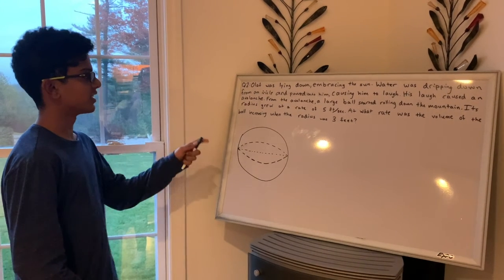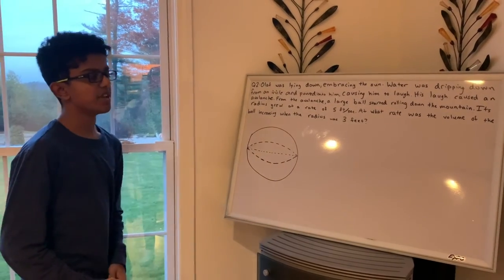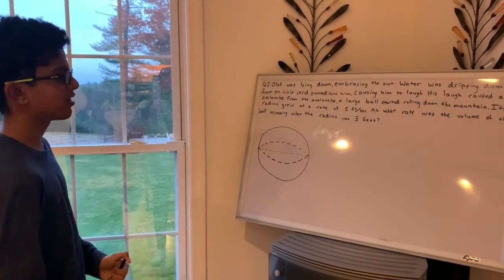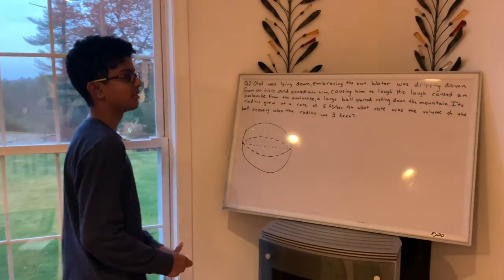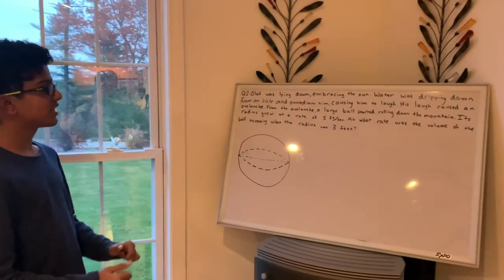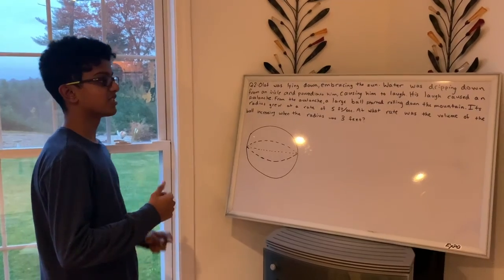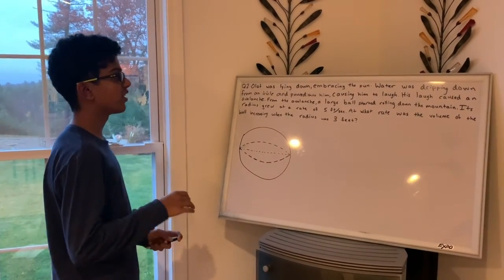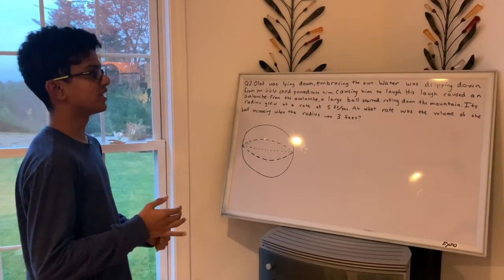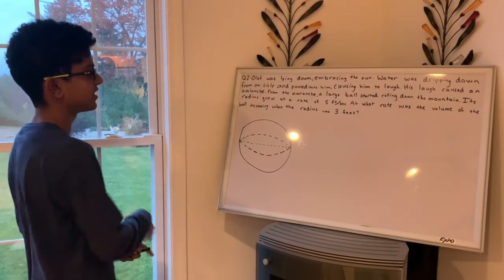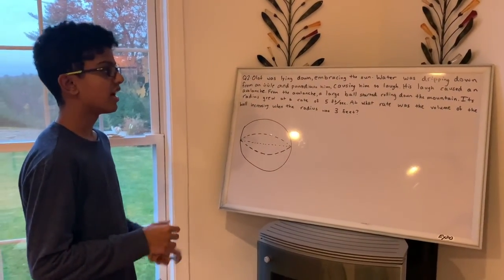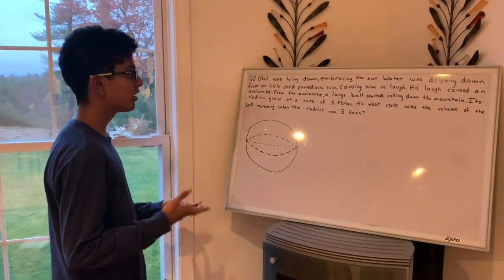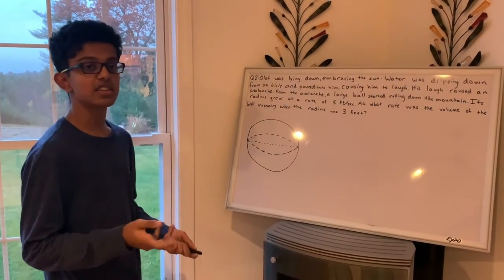Okay, so here is question 2 based on the situation that you saw Olaf was in from the video. Olaf was lying down embracing the sun. Water was dripping down from the ice wall and poured onto him, causing him to laugh. His laugh caused an avalanche. From the avalanche, a large ball started rolling down the mountain. Its radius grew at a rate of 5 feet per second. At what rate was the volume of the ball increasing when the radius was 3 feet?